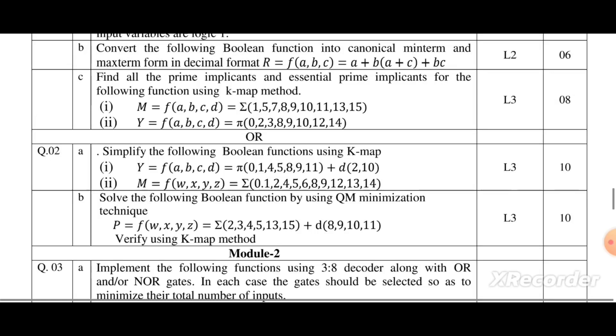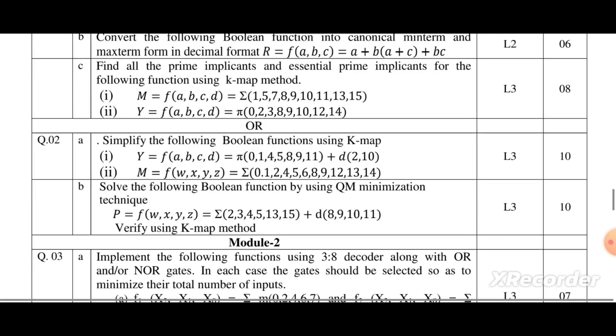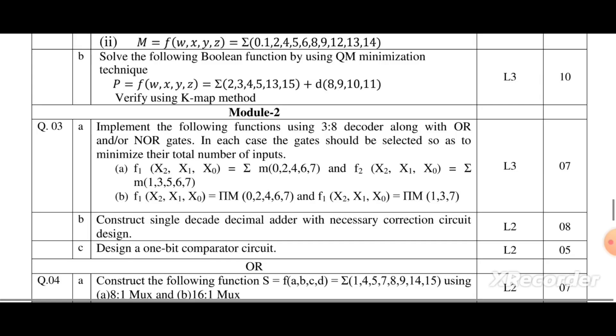In question 2, the choice question, we need to simplify these functions using K-map. In 2b, you can see Quine-McCluskey minimization technique is asked. Then coming to module 2, 3-to-8 decoder along with OR and NOR gates.